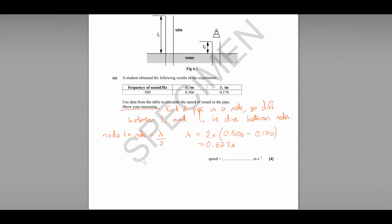So we can then use our wave speed equation V equals F lambda to multiply the frequency 500 by the wavelength 0.672 and it gives us a speed of sound of 336 meters per second.